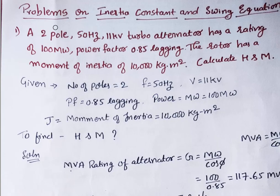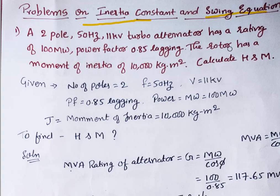Good morning. Today we will discuss the problems on inertia constant and the swing equation. The first question is: a 2-pole, 50 Hz, 11 kV turbo alternator has a rating of 100 MW, power factor of 0.85 lagging, the rotor has a moment of inertia of 10,000 kg·m². Calculate H and M — the inertia constant H and M.